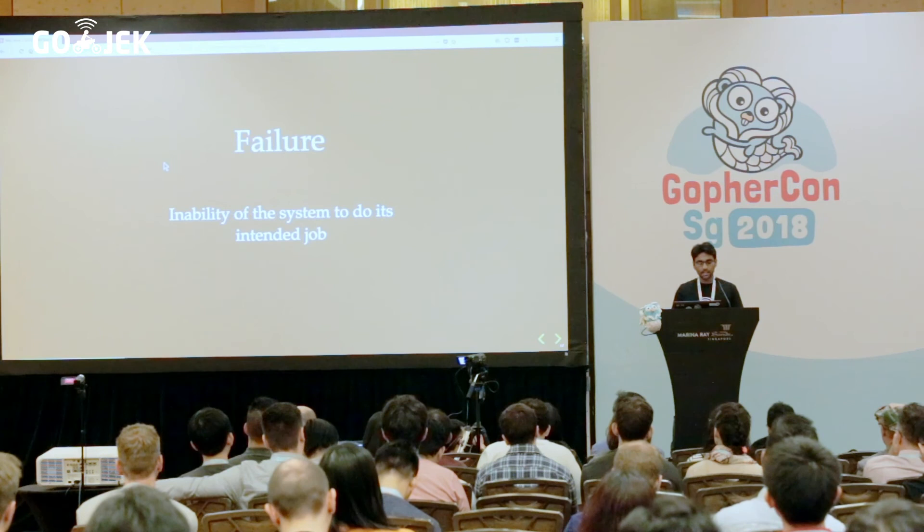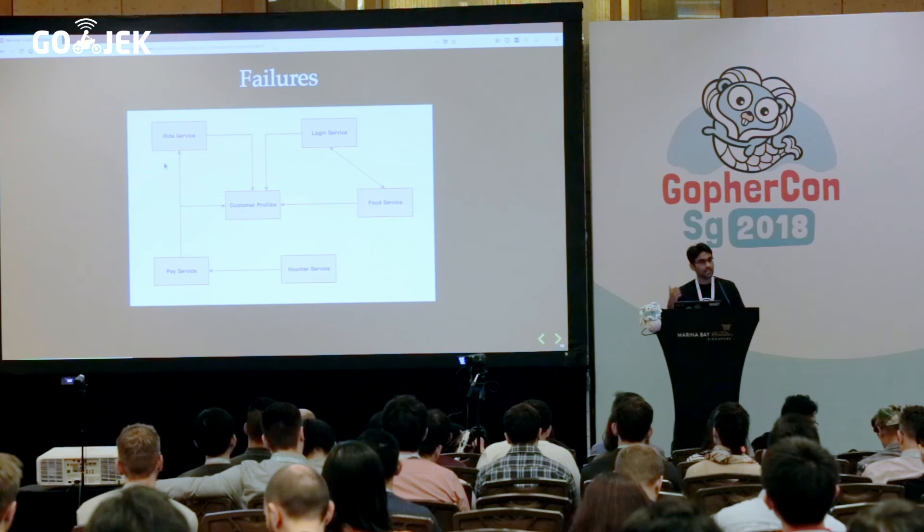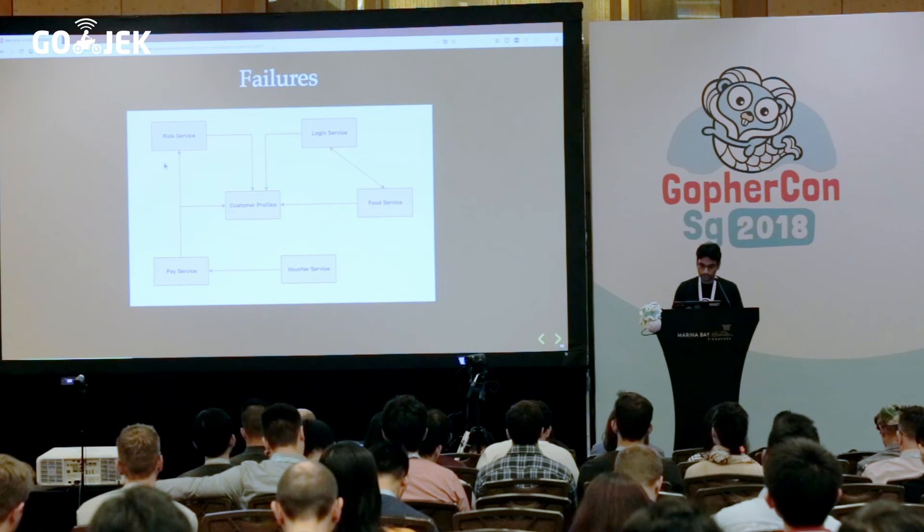Let's look into what a failure is. Failure is nothing but the inability of the system to do its intended job. In Gojek's case, if Gojek is unable to take orders from people, then it's a failure. This is what it will look like when you actually don't control the faults — all the systems are affected including the transitive dependency. And if you are unable to take orders, your business is down. That's as simple as that.